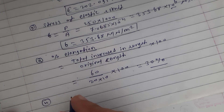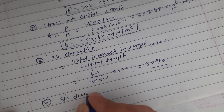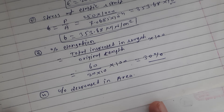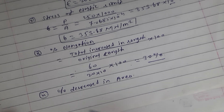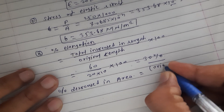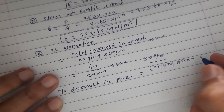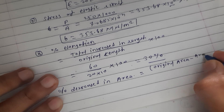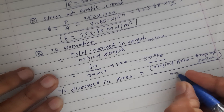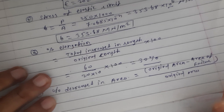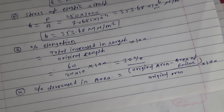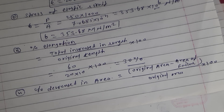Fourth, calculate percentage decrease in area. Formula: original area minus area at failure, divided by original area, into 100. Original area is pi by 4 into 3 squared (centimeter). Area at failure: pi by 4 into 2.25 squared (centimeter). Both values are in centimeter so kept as-is, not converted to mm. Into 100.